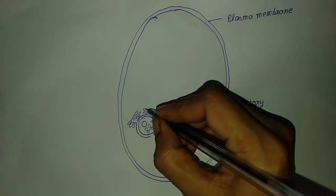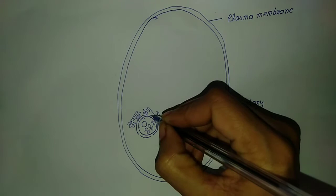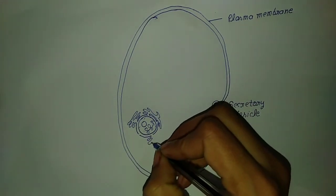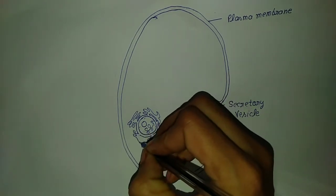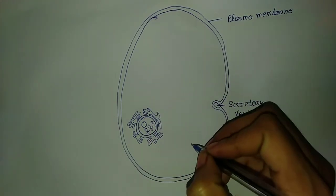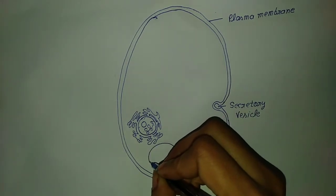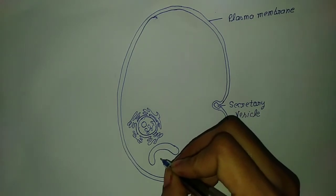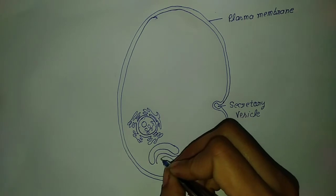These are chromatin, and this is the nucleus membrane. These are endoplasmic reticulum. The endoplasmic reticulum is attached to the nucleus membrane, and the nucleus membrane has a nucleopore.